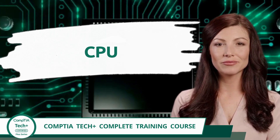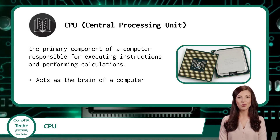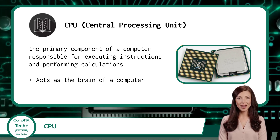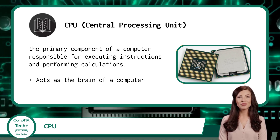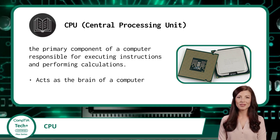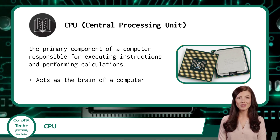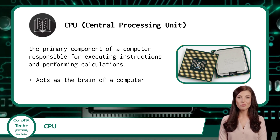CPU. The Central Processing Unit, or CPU for short, is the primary component of a computer responsible for executing instructions and performing calculations. The CPU acts as the brain of the computer, carrying out essential tasks such as arithmetic operations and logical comparisons. It interprets and executes instructions from computer programs, allowing the computer to perform tasks and run applications.